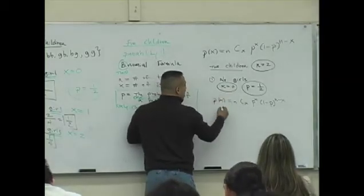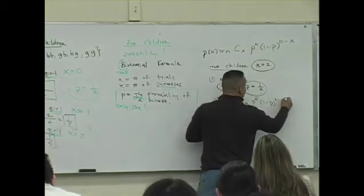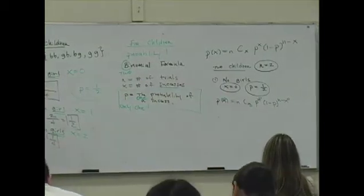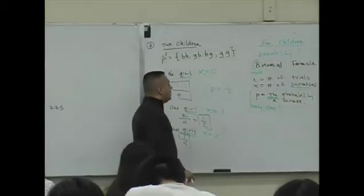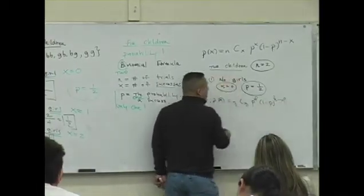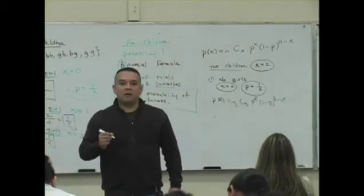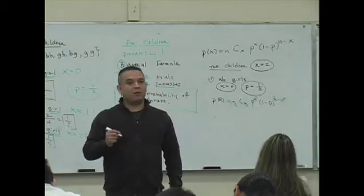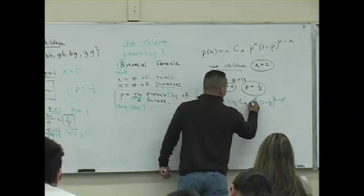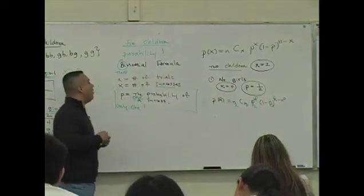So here's the deal. What's the value of x now? 0. Wherever there's an x, put a what? Put a 0. You guys okay with this? What's the value of n? 2. Wherever there's an n, put a what? 2. What else is left? Little p. Wherever there's a little p, put a what? 1 half. Now you have all the...